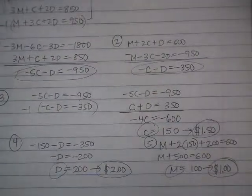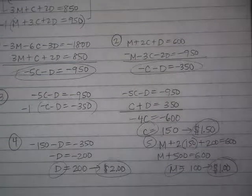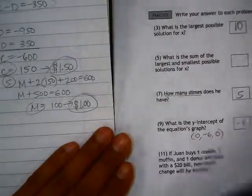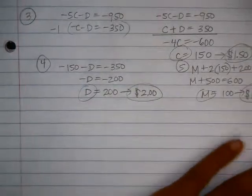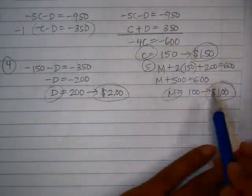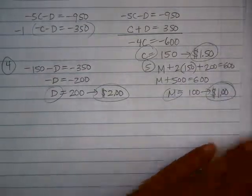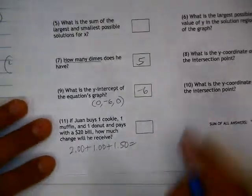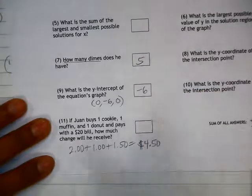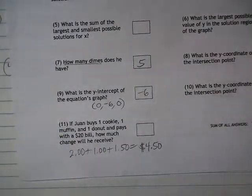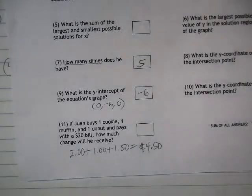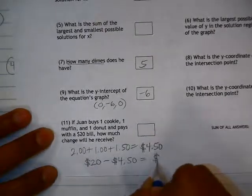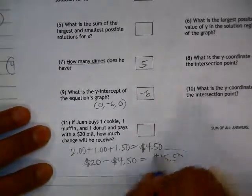So let's go back and look at the question that we're being asked here. The question is if he buys one cookie, one muffin, and one donut. So let's add up the total cost if we had one of each. So that would be $2 plus $1 plus $1.50, which is $4.50. His bill is $4.50, but it says that he pays with a $20 bill. How much change will he receive? So I need to calculate $20 minus the actual charge of $4.50. So he will get change of $15.50.